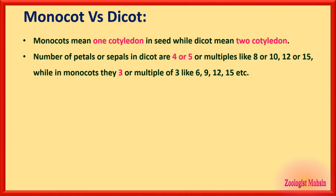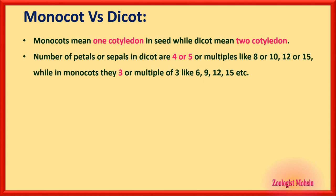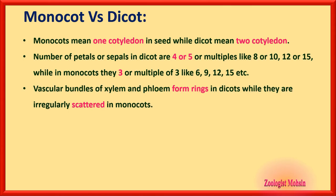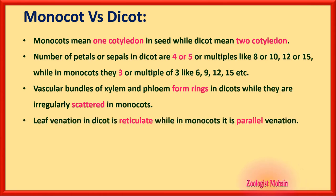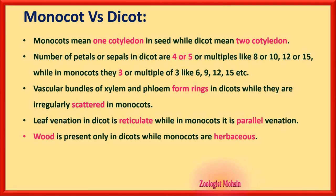In monocots, the number is three or multiples of three, like six, nine, twelve, or fifteen. You just need to remember whether the plant is monocot or dicot: if monocot, there must be three calyx and three corolla; if dicot, four or five. Vascular bundles of xylem and phloem form rings in dicots while they are irregularly scattered in monocots. Leaf venation in dicots is reticulate (networked), while in monocots it is parallel. Wood is present only in dicots while monocot stems are mostly herbaceous.